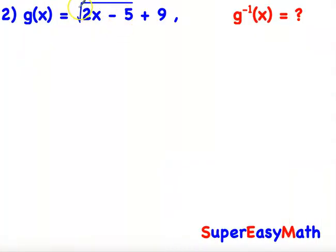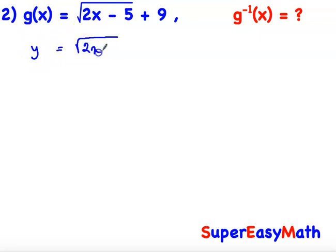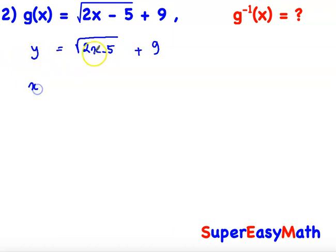Another example. The first step is to place y instead of g(x), so y = √(2x − 5) + 9. The second step is to replace y by x and x by y, so instead of y we write x, and instead of x we write y. So x = √(2y − 5) + 9.